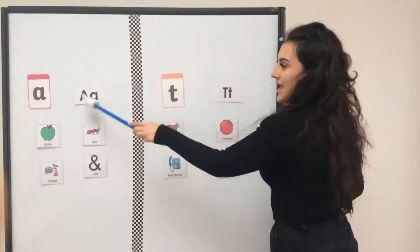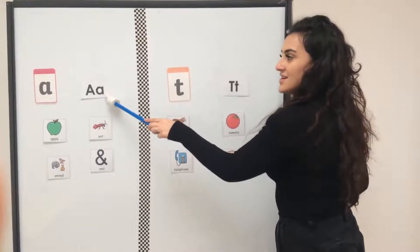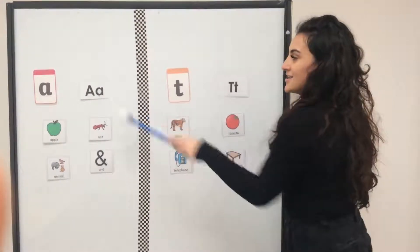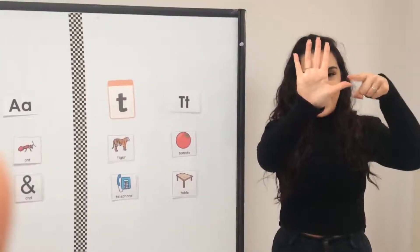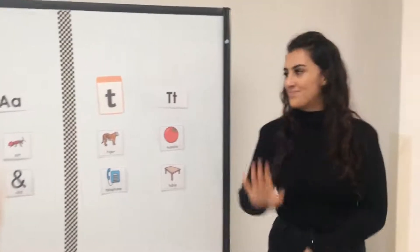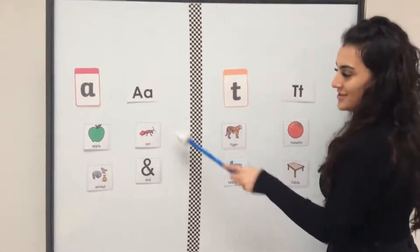Here we have the capital A and the lowercase A. So remember our sign for A. Let's have a look at our A words.